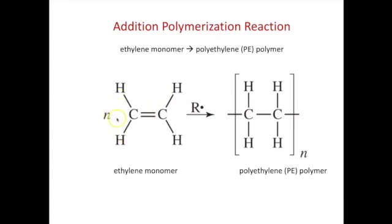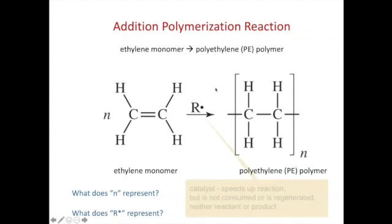And this N represents how many monomers will go into the addition polymerization reaction. So N is a whole number value that's going to be called a coefficient. R represents a catalyst, and a catalyst is something that speeds up a chemical reaction but is not consumed in the reaction or is regenerated by the reaction.